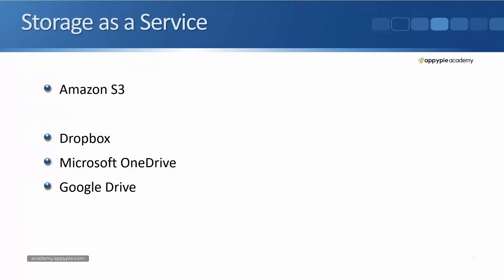The last example is storage as a service. A well-known example is Amazon S3, where you can use web-based storage over at AWS to store things like files and images. This can be cost-effective because Amazon has virtually unlimited amounts of storage, saving you from having to provide the storage yourself. Other examples of storage as a service — though not normally called that — are Dropbox, Microsoft OneDrive, and Google Drive, which you're probably already using yourself.